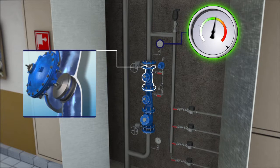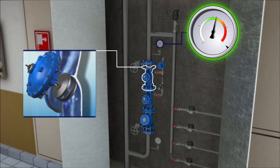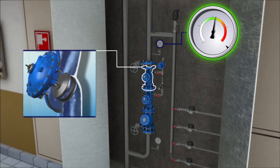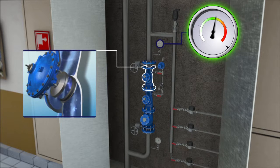The PRV regulates to its closed position, reduces the downstream pressure, and the system returns to safe operation setting.